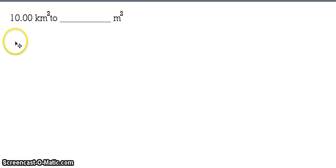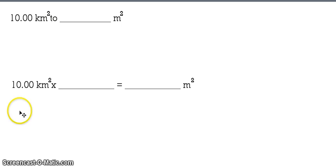So as always, we start with our given which is 10.00 square kilometers. Then one blank which means we need one equivalent statement that needs to be converted into one conversion factor for us to arrive at our final desired unit which is in square meters. Our equivalent statement needed here is one kilometer is equal to 1,000 meters.